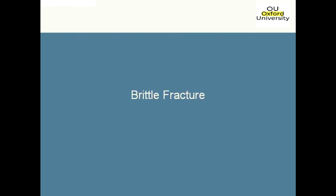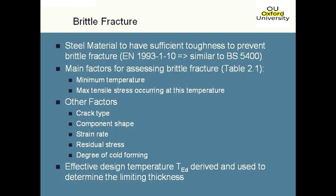Moving on to brittle fracture. Eurocode 3 requires that all steel material has sufficient toughness to prevent brittle fracture from occurring. Brittle fracture is covered in Eurocode 3 Part 1 Part 10 — it's got its own code dealing with this. Generally you consider two main items: the minimum temperature, and the maximum tensile stress occurring at that temperature. Various other effects that affect brittle fracture are dealt with by varying the minimum temperature and the tensile stress — these include crack types, strain rates, residual stresses, the shape of the item, and any cold forming within the section.